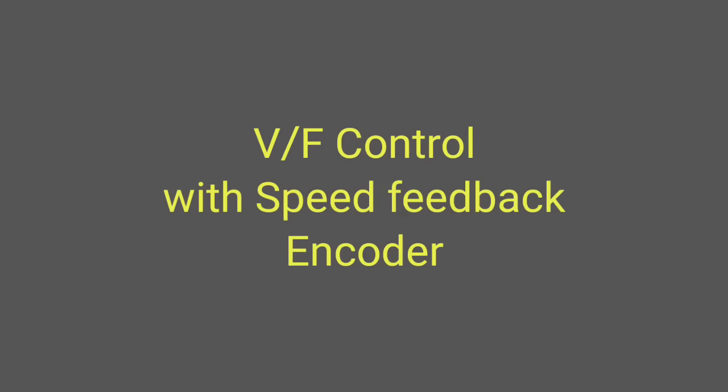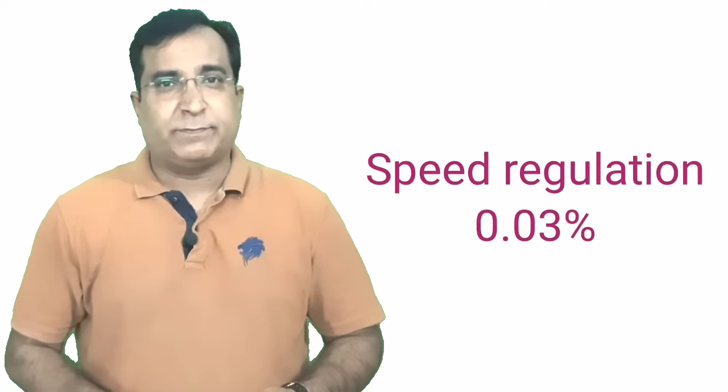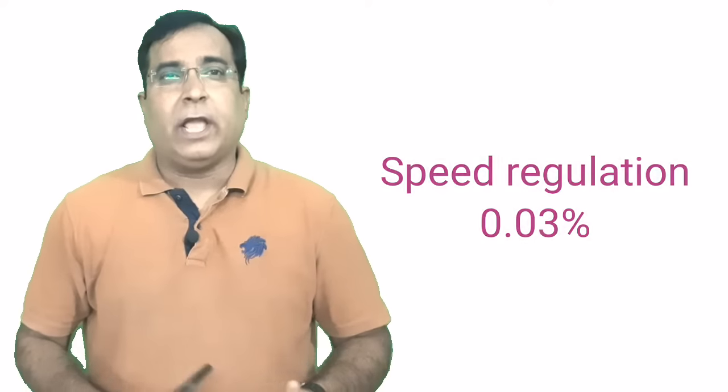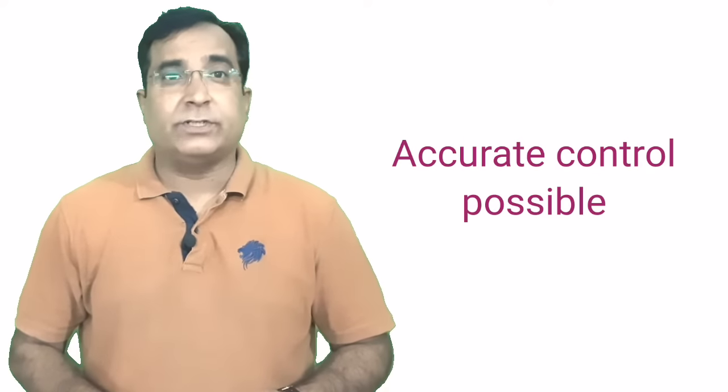V/F control with speed encoder: If a speed encoder is added to the V/F mode sensorless control, then a VFD can run up to 0.03% speed regulation. In this mode accurate control becomes possible which is not available in alone sensorless control. So where you need accurate close control or tighter control to the setpoint, you can go for this mode. The output voltage in this mode will be according to the V/F pattern you have selected in programming.